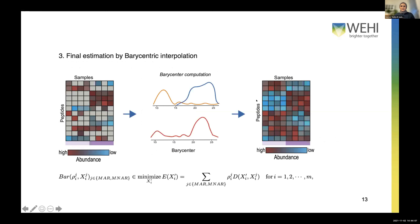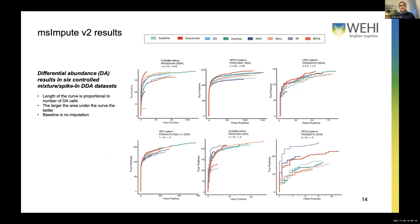The barycenter approach recognizes that each feature has some probability of being missing at random and some probability of missing not at random. We use a data-driven, entropy-based metric to determine which of the two distributions is more likely and then take a weighted average of the distributions based on that evidence. We call this the barycenter because barycenters are essentially weighted averages of distributions. The preprint should be out soon, with full methodological details available in the manuscript.